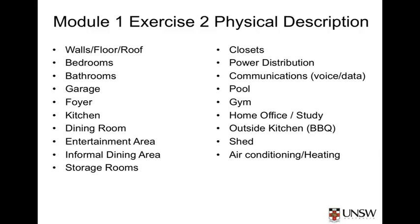Notice that some of these will be similar for an apartment — that is, there will be walls, floor, roof, bedrooms, bathrooms, storage rooms, kitchen, and so on, although many of those might be smaller and some functions might be combined. The apartment may not have room for its own gym or pool, but it may have a small outside entertaining area on a balcony, and may also have a shared gym or pool in the apartment complex.